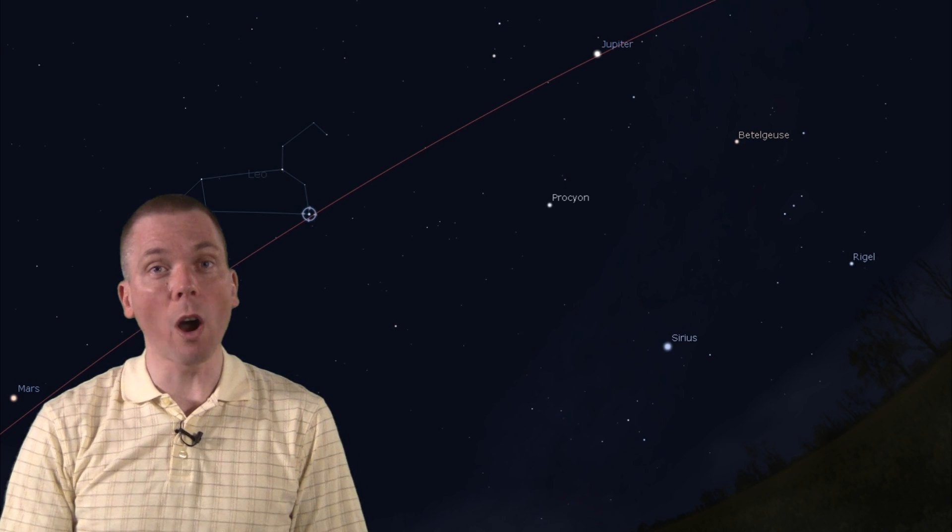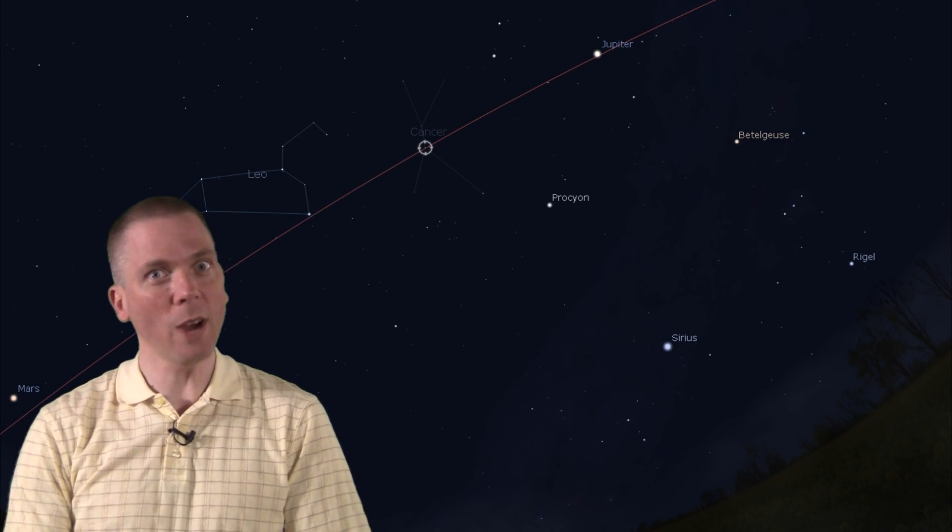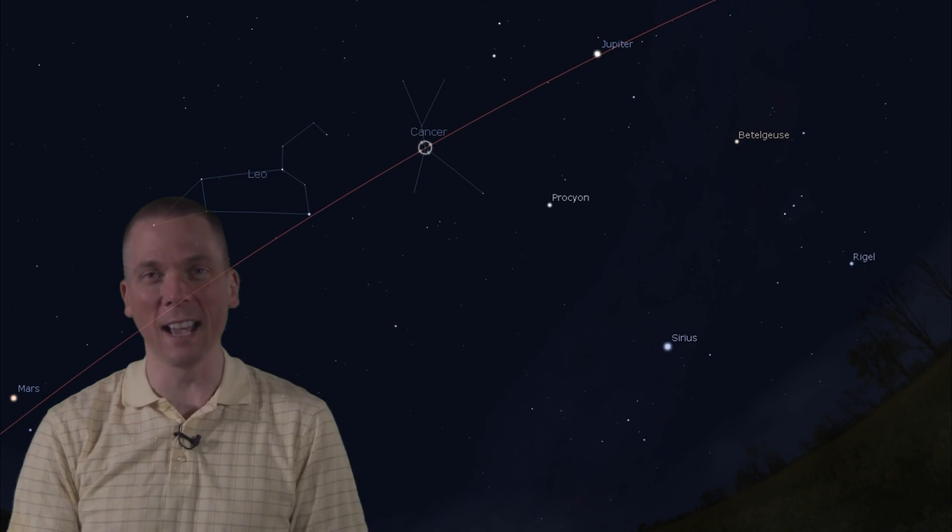So if Gemini and Leo are both zodiac constellations, what do we skip on our way there in that blank-looking section of the sky? Well, Cancer the Crab, of course. Don't buzz away just yet. The Beehive is next.